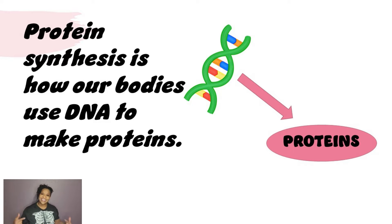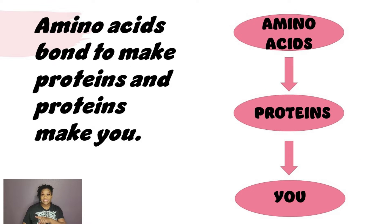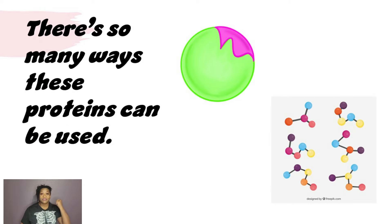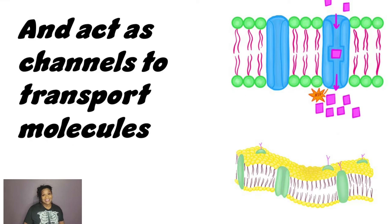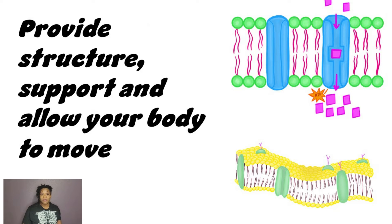Protein synthesis is how our body uses DNA to make proteins. Amino acids join to make proteins, and proteins make you. There are so many ways these proteins can be used — like for growth of skin, bone, and muscle tissue. They're used to repair those same tissues too.